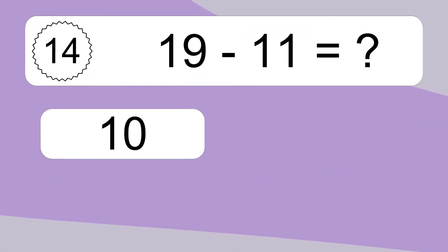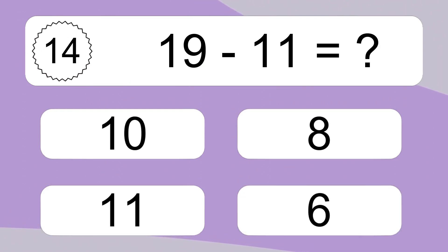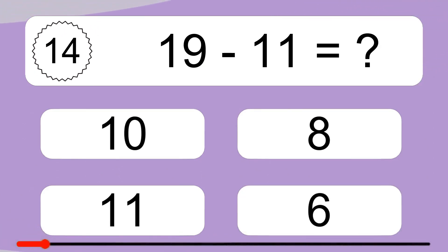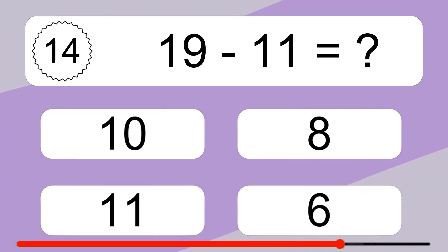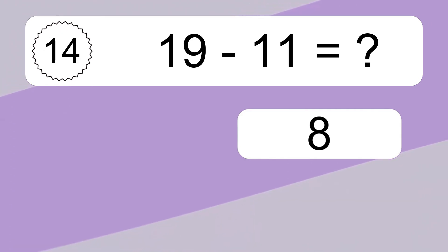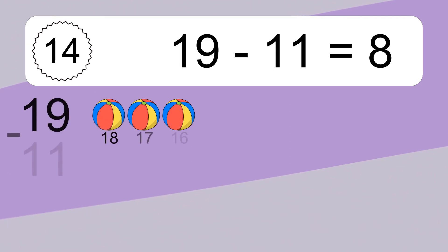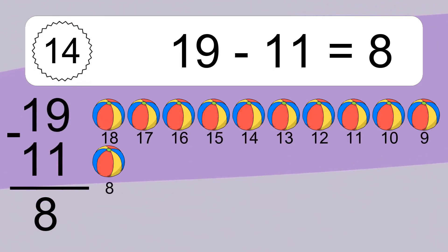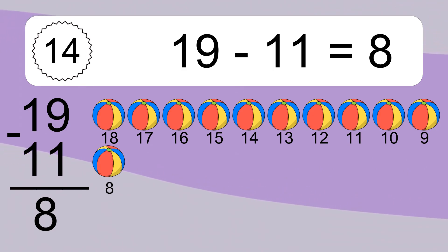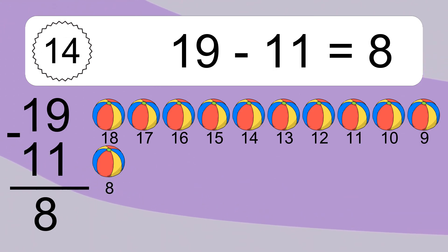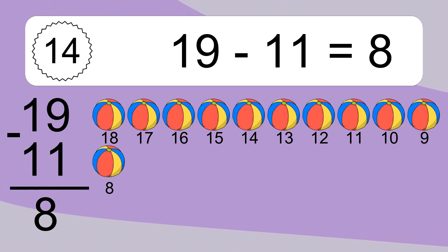19 minus 11 equals what? 19 minus 11 equals 8. Let's count it. 18, 17, 16, 15, 14, 13, 12, 11, 10, 9, 8.